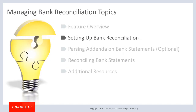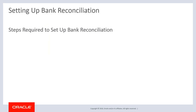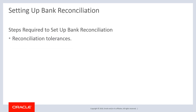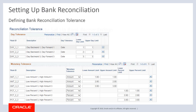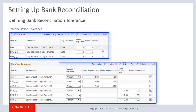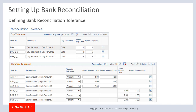Before you can initiate bank reconciliation processing, you must define reconciliation tolerances, specify reconciliation rules, run the reconciliation SQL process, and associate reconciliation rules with bank accounts. Use the reconciliation tolerances page to define date and monetary reconciliation tolerances to associate with the reconciliation rule. The reconciliation tolerances shown here are delivered as system-defined tolerances and cannot be deleted.